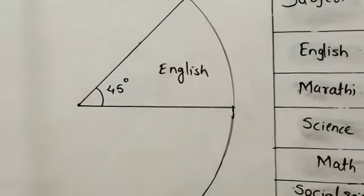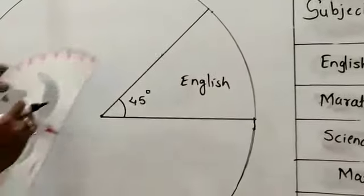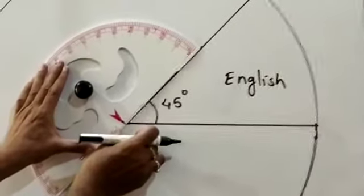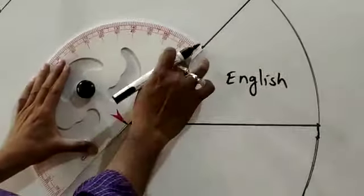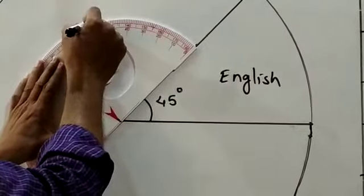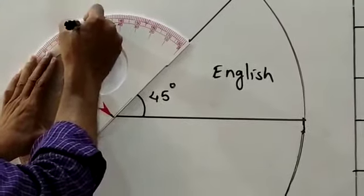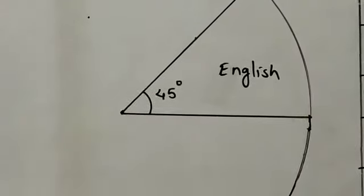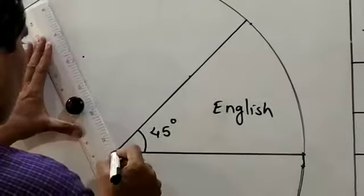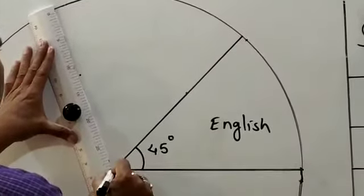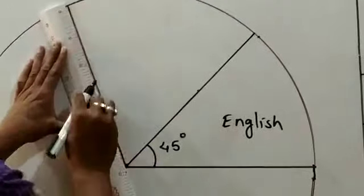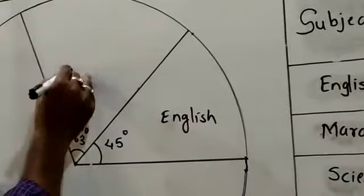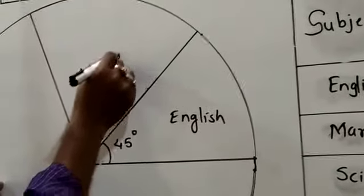Next, draw 63 degrees for Marathi. Adjust the protractor from 0, and count: 10, 20, 30, 40, 50, 60 — 63 degrees will come here. Draw the radius through that point. This 63 degrees is the central angle of Marathi.